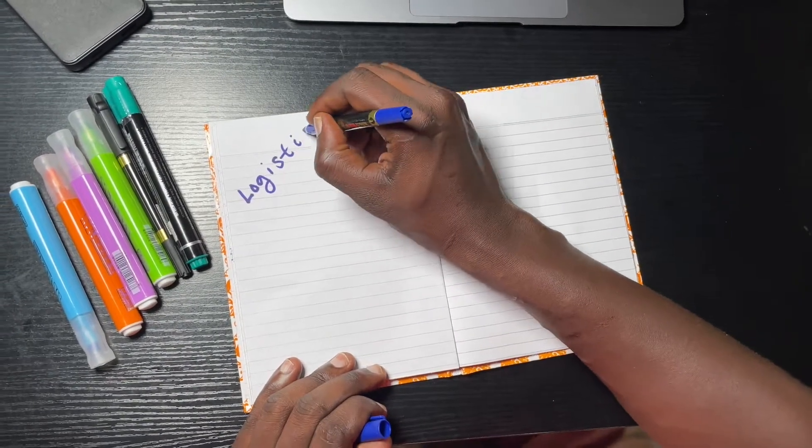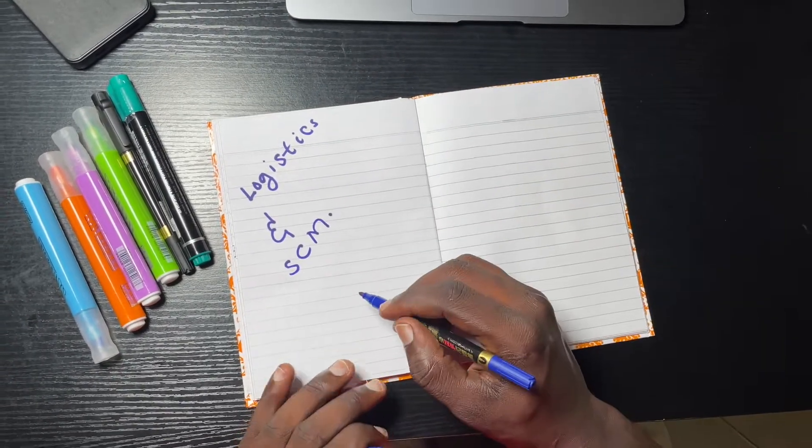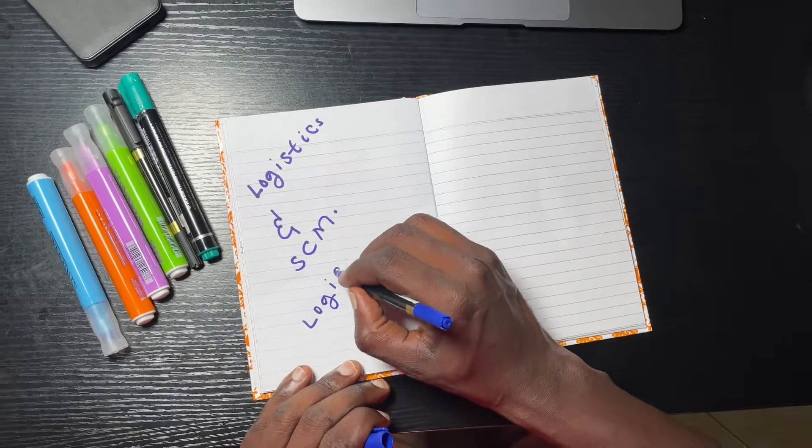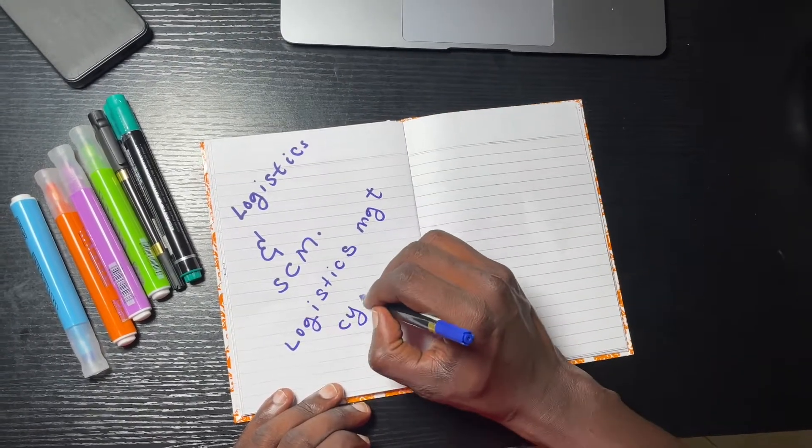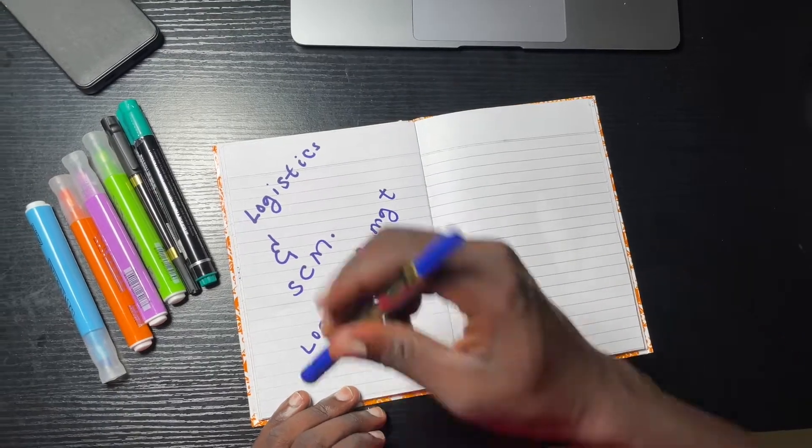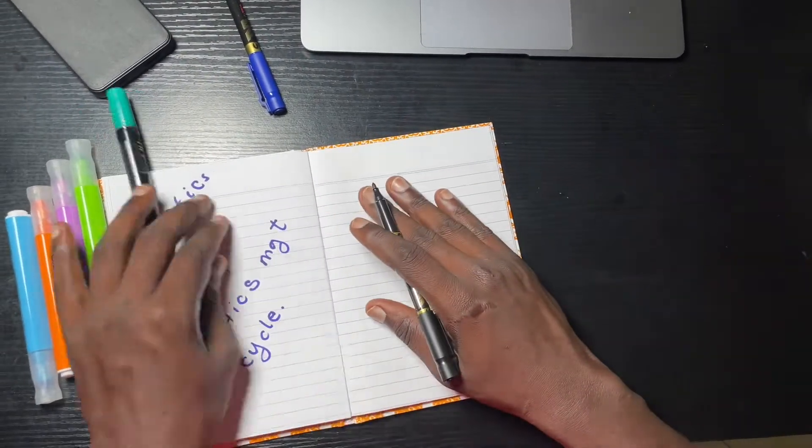Logistics management is the operational component of supply chain management that has to do with the effective planning, control and implementation of the movement of goods. While supply chain encompasses processes and systems that ensure products get from point A, typically the manufacturer, to point B, the patient.